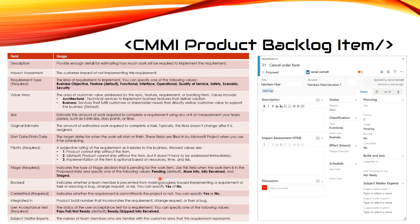Triage is a required field with a default value of Pending; you can also set it to More Info, Received, or Triaged. This indicates the type of triage decision pending for the work item, used when the work item is in the Proposed state. Blocked is either Yes or No, indicating whether something is preventing progress. Committed is also required and indicates whether the requirement is committed in the project — Yes or No. Integrated In holds the product build number that incorporates the requirement, change request, or fixes the bug.